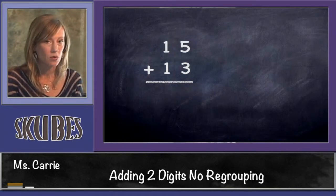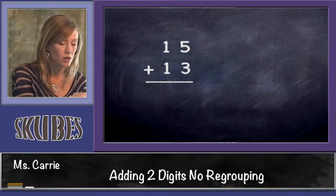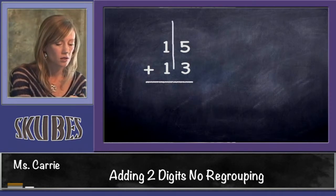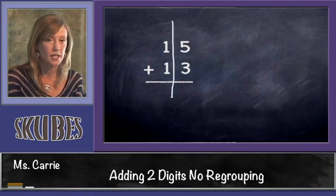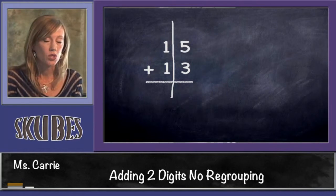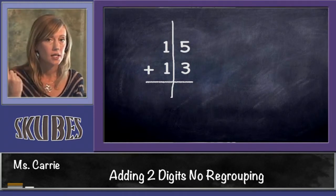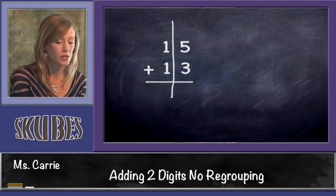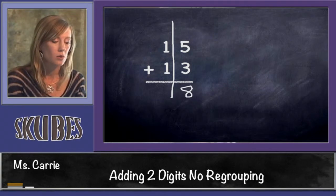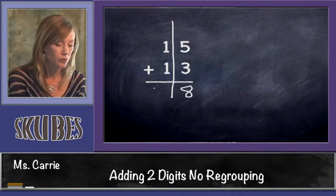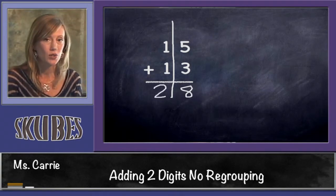Let's try 15 plus 13. Here's our line. We're going to start on the right-hand side in the ones column. We'll start with 5 first and add 3: 5, 6, 7, 8. Five plus 3 is 8. And in the tens side, we know that 1 plus 1 is 2. So our answer is 28.